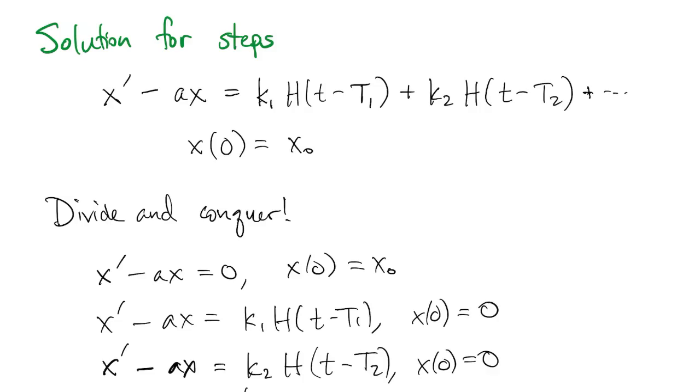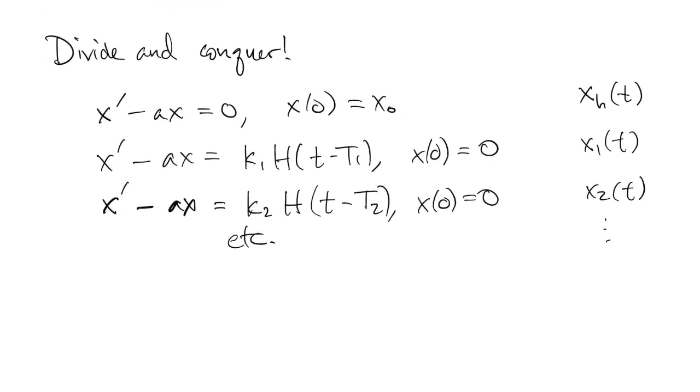So if we call a solution to the first one, let's say that's XH, and the next one is the solution is X1, and the next one the solution is X2, etc. Then we'll let X be the sum of all those, so XH plus X1 plus X2, as many as we have.